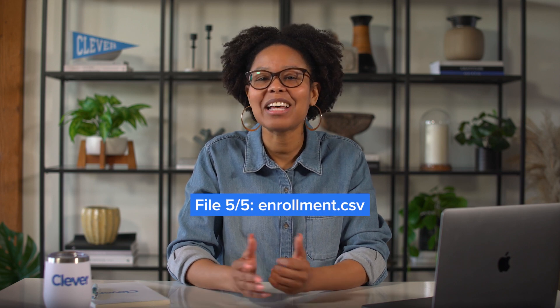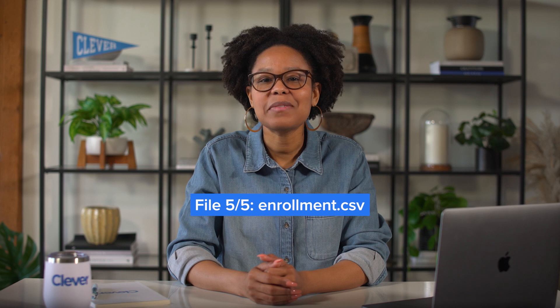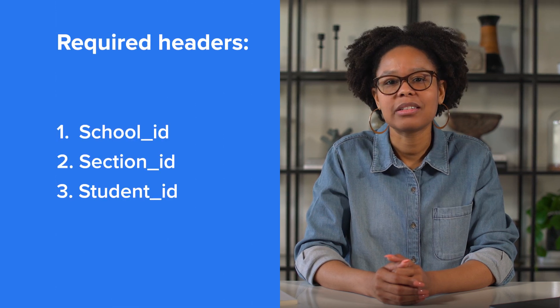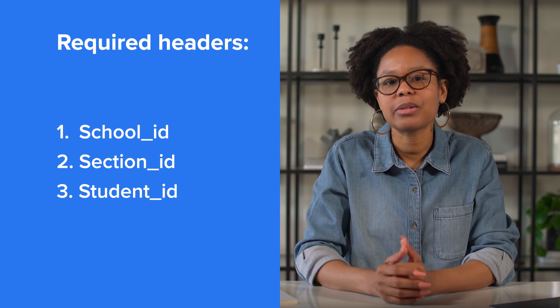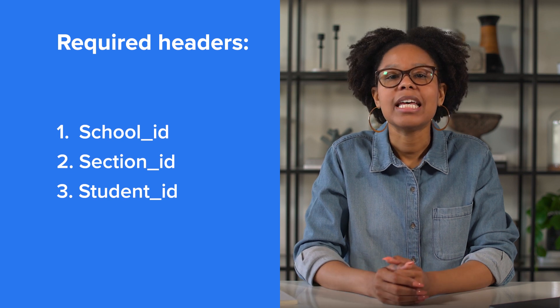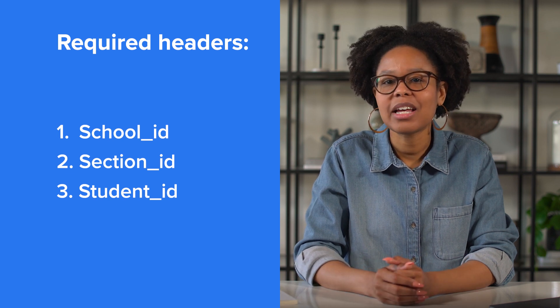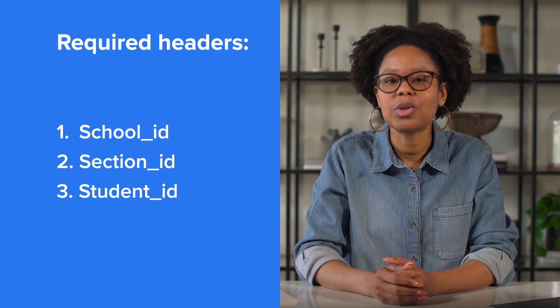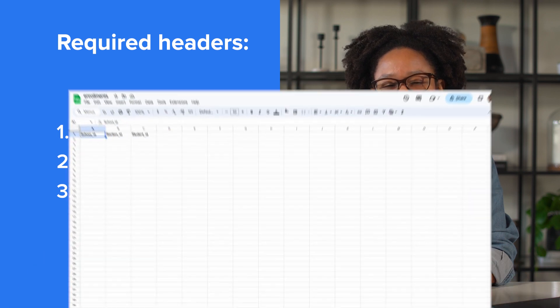This is the last one. This file has three headers or columns to be uploaded — all three are required. This file tells Clever which students are enrolled in which sections.